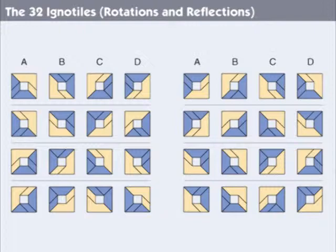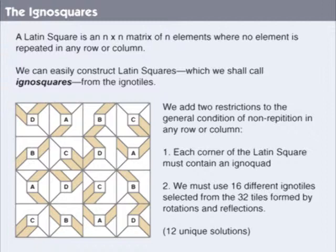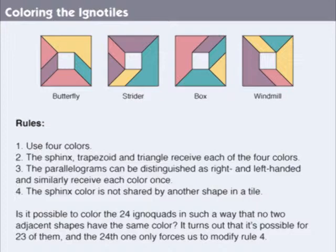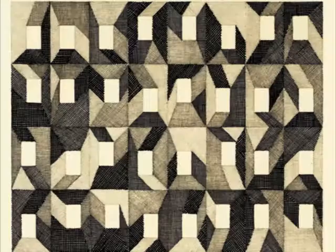Next, I looked for ways of building four-by-four arrays. The Latin square — an n-by-n array of n elements, where no element is repeated in any row or column — gave me a basic rule. Over the winter of 1979 to 1980, while living in Spain, with a few insights and a good deal of brute force, I developed rules for four colorings of the igno-quads.